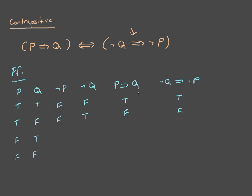We have agreement between these two statements. Now we have false P and true Q, so let's fill that out quickly. P implies Q: you have a true conclusion and a false premise, so the conclusion is true, making the statement true. And not P is true, so you have a true conclusion, and therefore this statement is also true.